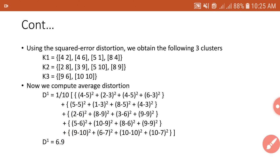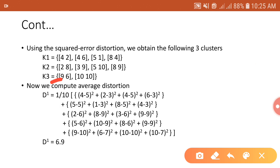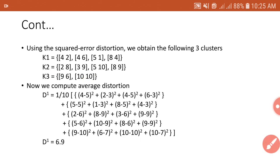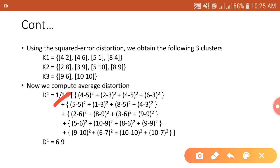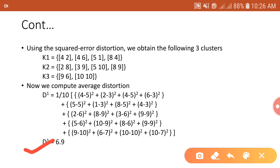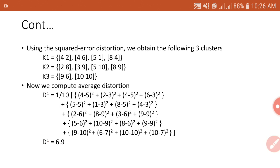For cluster K3, the first vector is (9,6) and code vector R3 = (10,7), giving distortion (9−10)² + (6−7)². The same is done for vector (10,10). We divide the total distortion by 10 because we need the average distortion and there are 10 vectors in the training data. The distortion for the first iteration is D1 = 6.9.